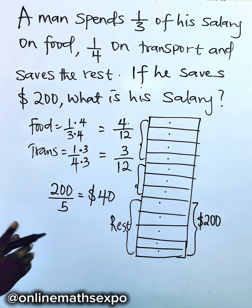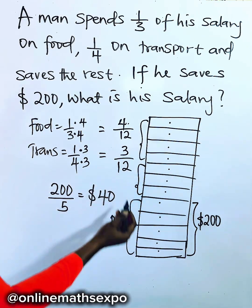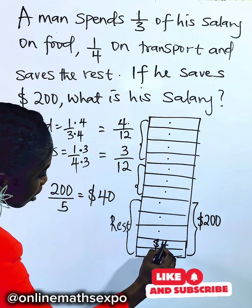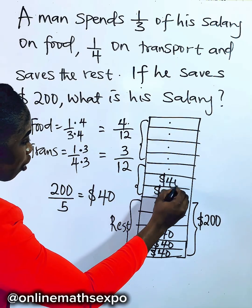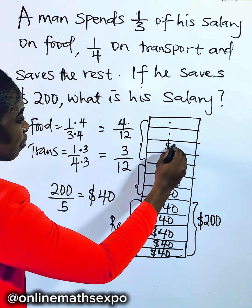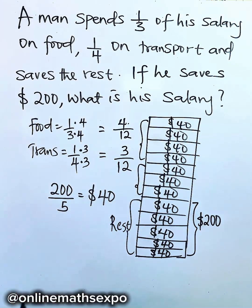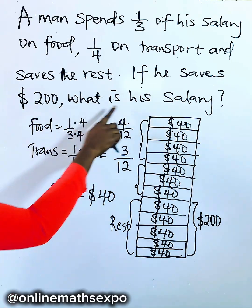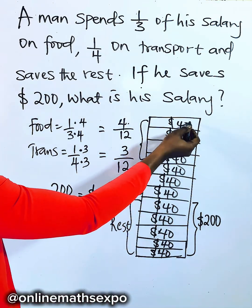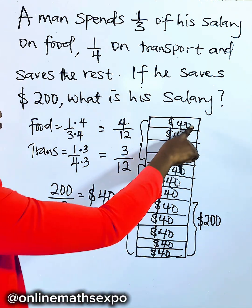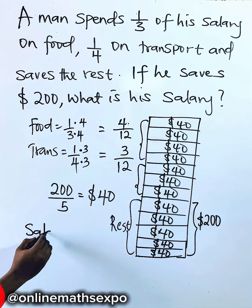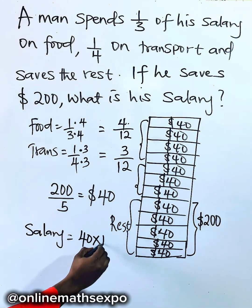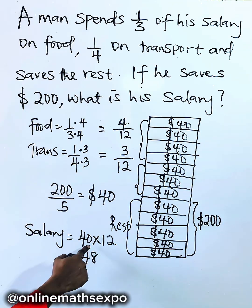That means each bar is $40, and it's the same for every bar since he shared everything into 12 bars. So each of the 12 bars is $40. To find his total salary, multiply $40 by the total 12 bars. 40 multiplied by 12: 4 times 12 is 48, then add a zero, giving us $480.